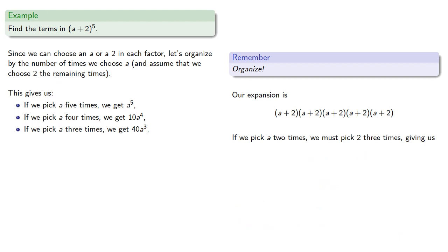If we pick a two times, we must pick 2 three times. This term will appear 5 choose 2, ten times, giving us 80a².